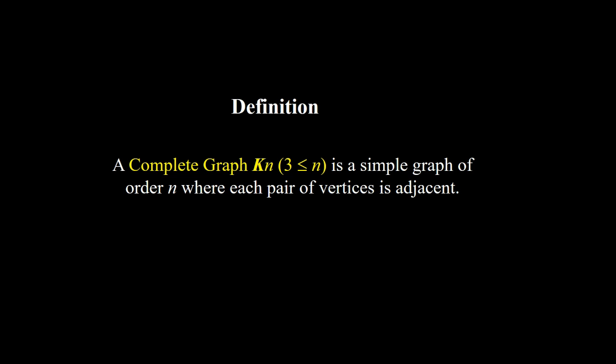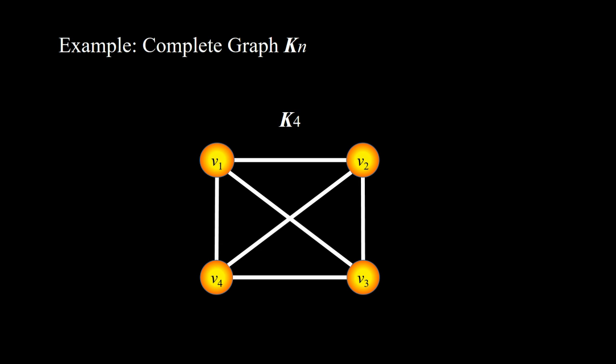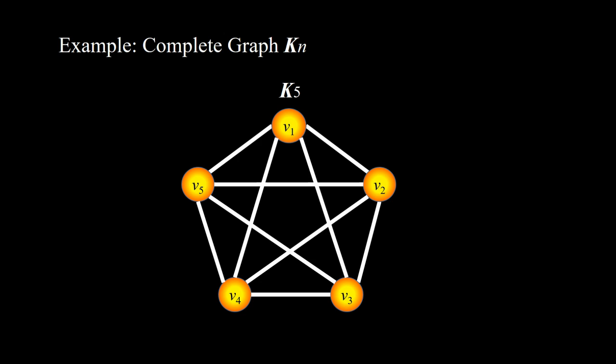A complete graph Kn where n starts from 3 is a simple graph of order n where each pair of vertices is adjacent. For example, K3 consists of three vertices where every two vertices are adjacent — and K3 is actually the same as C3. The complete graph K4 has four vertices where each pair is adjacent. K5 has five vertices and each pair of vertices is adjacent.